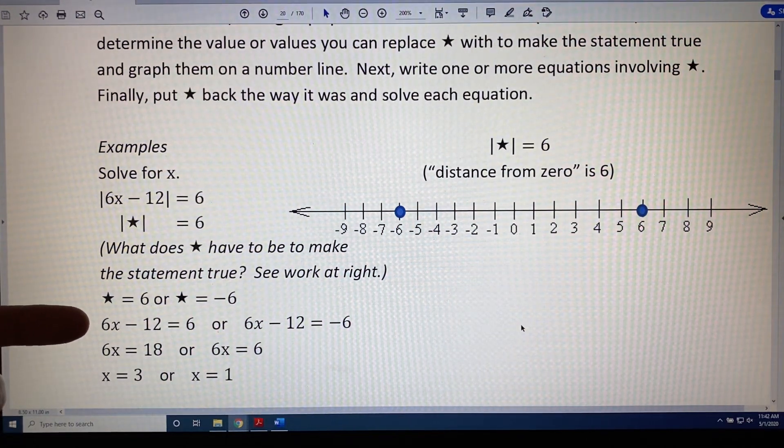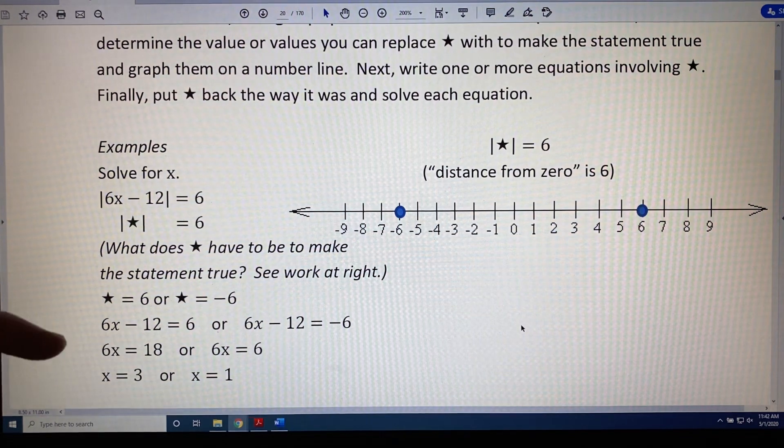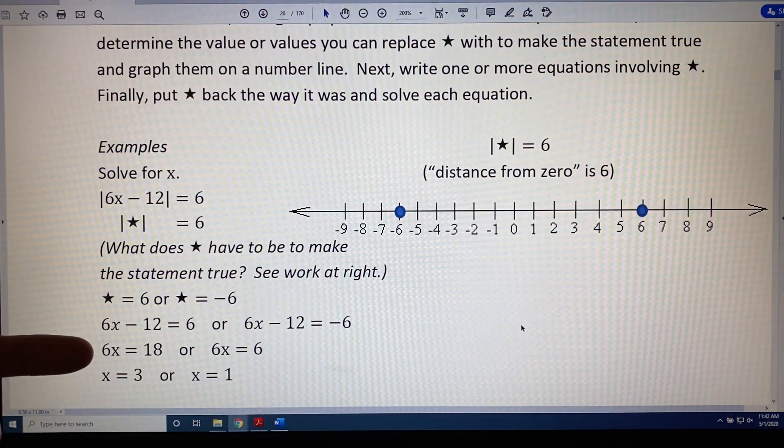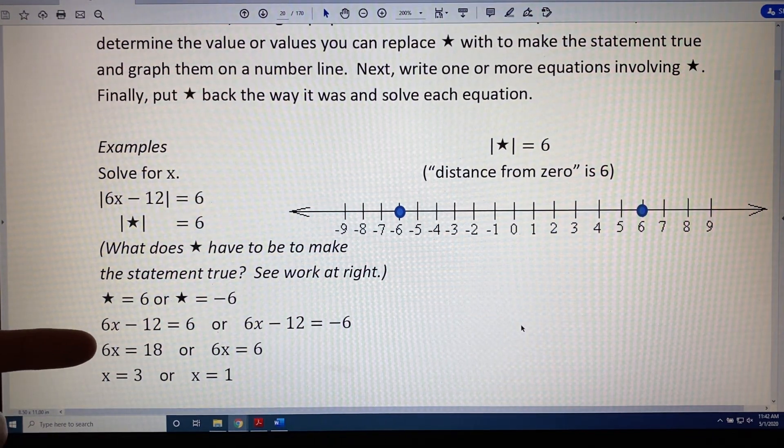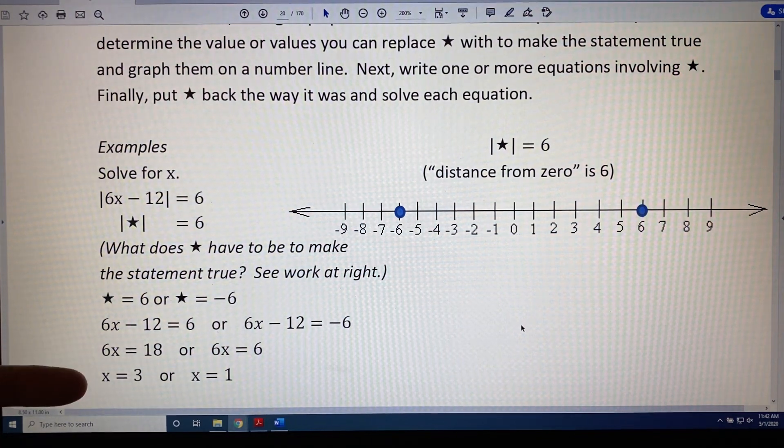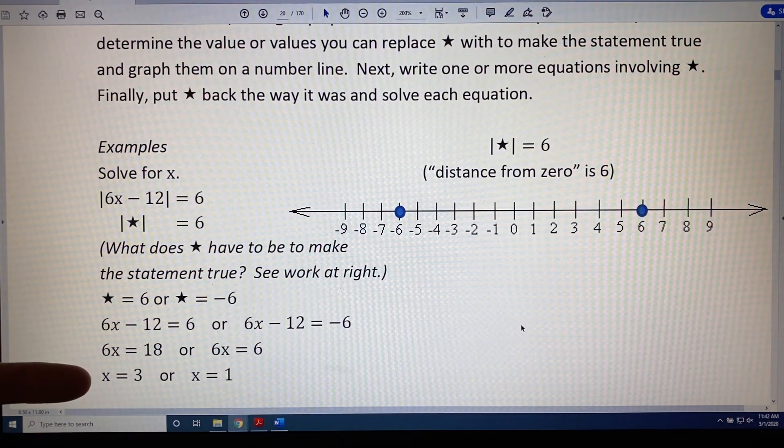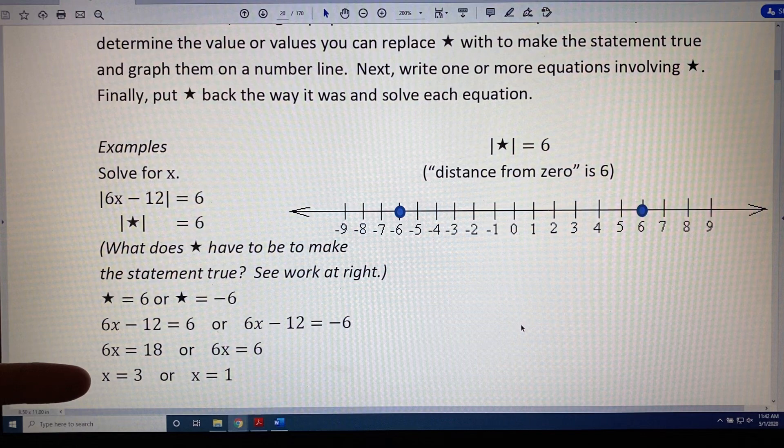Solving both these equations by adding 12 to both sides gives us 6x equals 18 or 6x equals 6, and dividing by 6 on both sides of both equations gives us two solutions: x equals 3 or x equals 1.